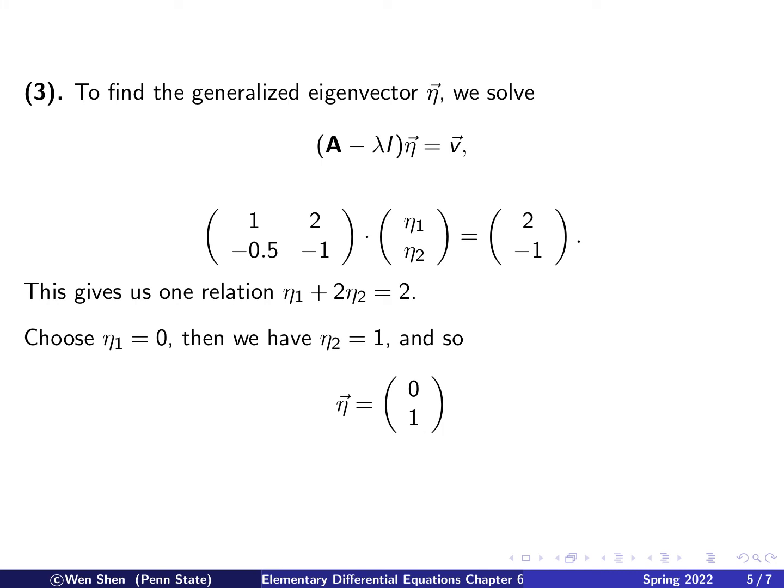And you can choose freely, let's say make a free choice, eta1 is 0, and then we see eta2 is 1, because then you have 0 plus 2 is 2. And then we have an eta, 0, 1. Here you can choose other numbers as well, which would give you different choices. Say you can choose eta2 to be 0, then eta1 is 2. That would work just as well.